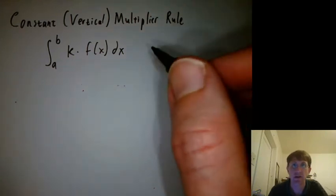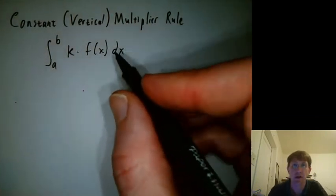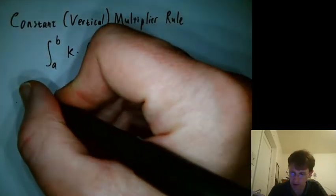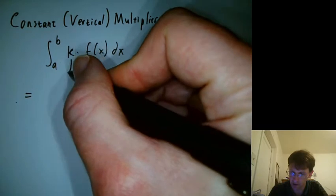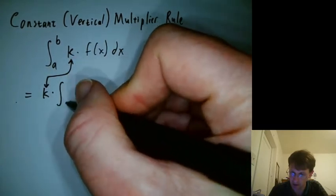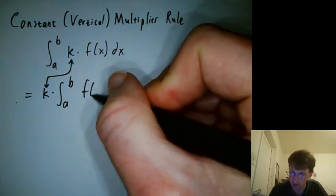All right, a few last rules about definite integrals. We would hope that the constant vertical multiplier rule works, and indeed it does. So if you have a constant multiplier there, you can bring it out of the integral, write it there, times the integral a to b f of x dx.